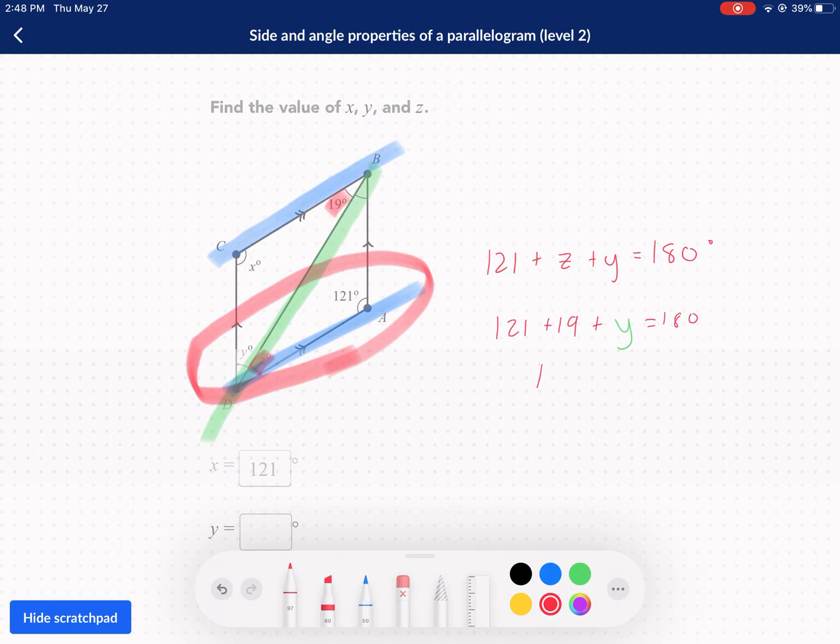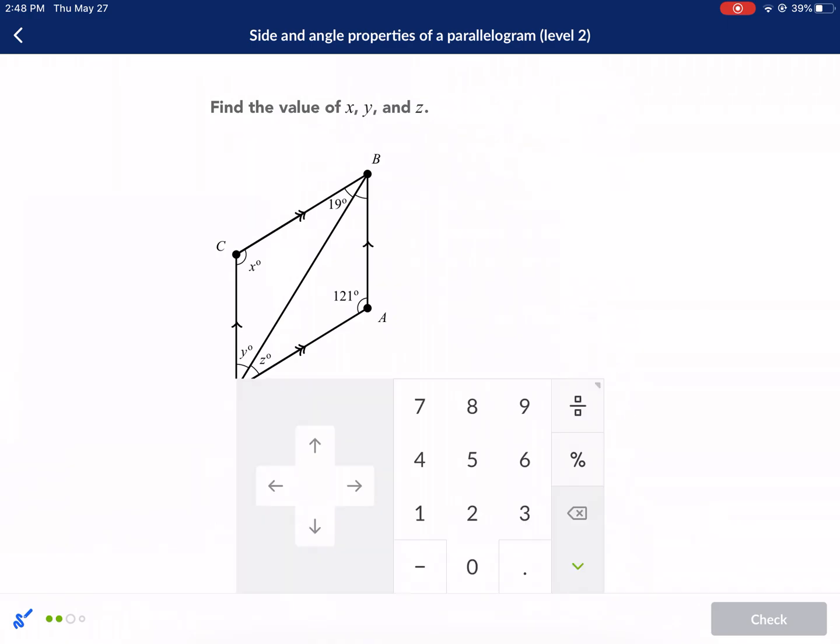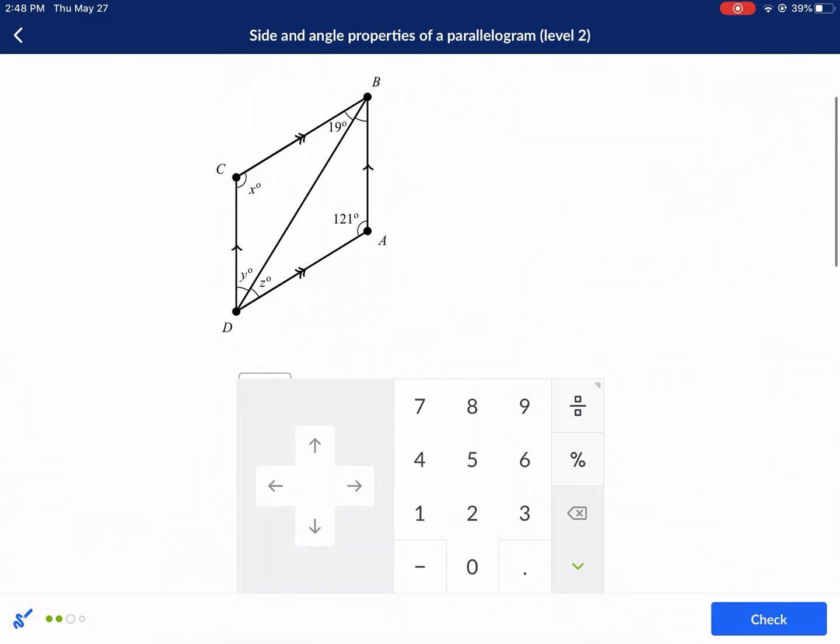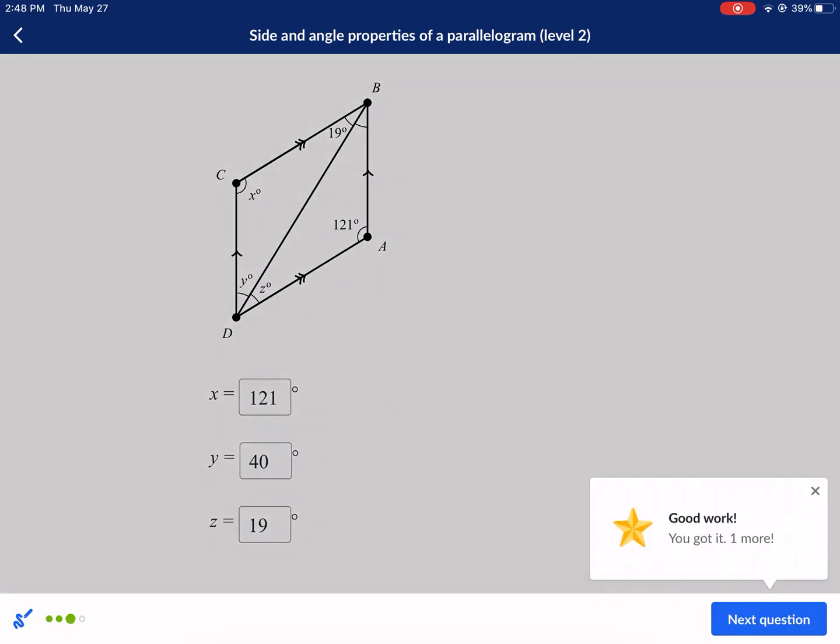Okay. 121 plus 19, that should be 140 plus y equals 180. So we're going to subtract 140 from both sides, and that's going to give us y equals 40. Good to go. Look at that. Y equals 40. Okay. And that's it. Got all three angles. Next question. And the last one.